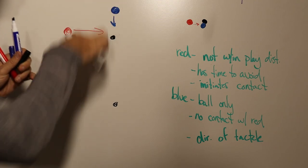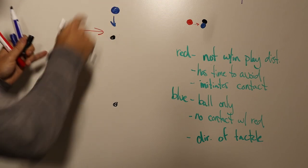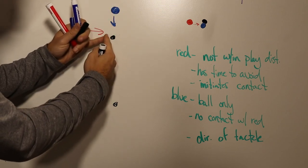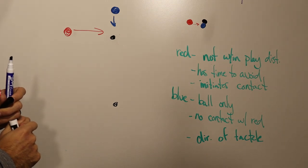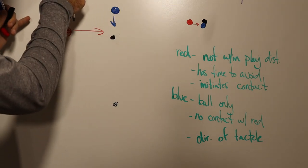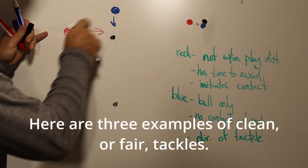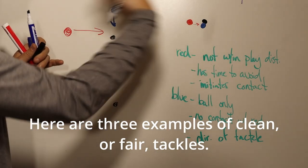Blue, when blue tackles for the ball, blue only touches the ball, never touches red, and tackles here at like a 90 degree angle to where red's coming in from. So blue's not going into red. Blue tackles at a 90 degree angle, ball only, boots it away, and then red goes into blue and kind of falls over.